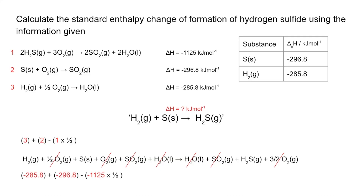Since we can do that with the equations, we do the same with the enthalpy change values and out pops the answer. So next time you're doing enthalpy change calculations and can't see an obvious method — calorimetry, bond enthalpies, or Hess's law cycles — you can use this equations method. This is actually how I was taught to do it in the 1980s, and every single question we had to answer used this method.